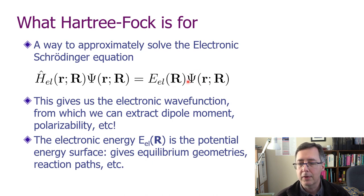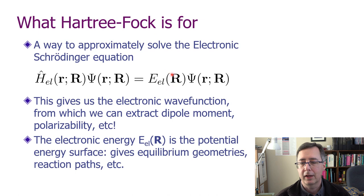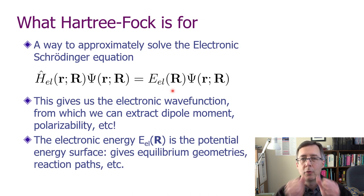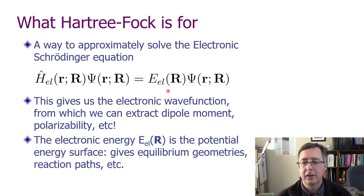The electronic wave function psi is our target, as well as the electronic energy, because from psi we can compute all kinds of things: polarizability, dipole moment, and more elaborate properties from derivatives of psi. From this potential energy surface, if we evaluate it at a handful of geometries and tweak the geometry to minimize the energy, we can get an equilibrium geometry. Getting the second derivative of the electronic energy with respect to nuclear coordinates gives us vibrational frequencies. So there are many things we can extract from psi or from the energy and its derivatives.